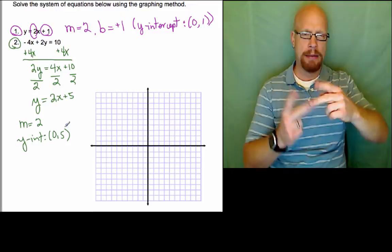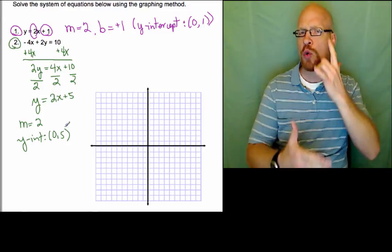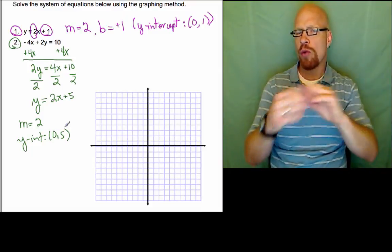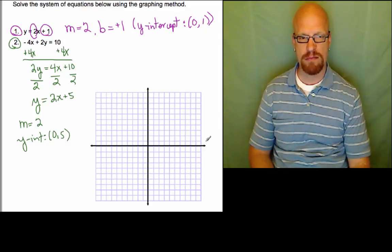Our first equation is 0, 1, the second one is 0, 5. It means they don't cross the y-axis in the same place. Now we'll see what it looks like once we draw it out and get the full story.